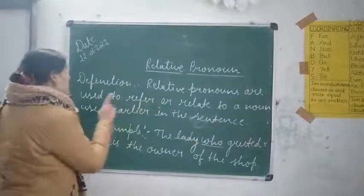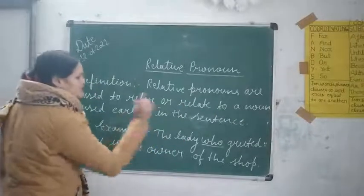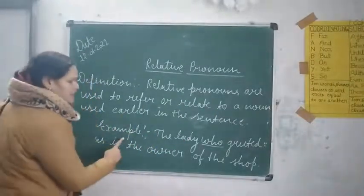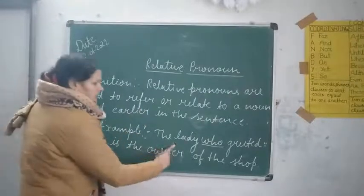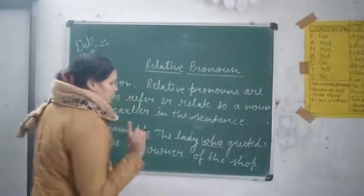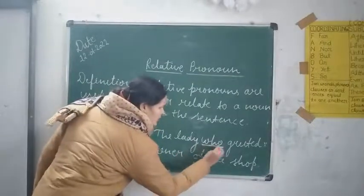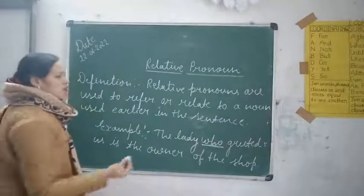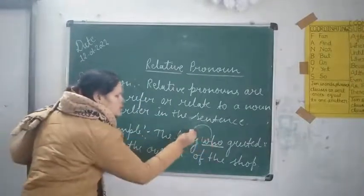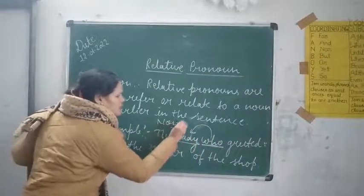Relative pronouns are used to refer or relate to a noun used earlier in the sentence. We will understand by the examples. I have written an example: 'The lady who greeted us is the owner of the shop.' So what is 'who' here? Who is a relative pronoun. How can we identify that? Who is used because of 'lady.' And what is 'lady' here? Lady is a noun.